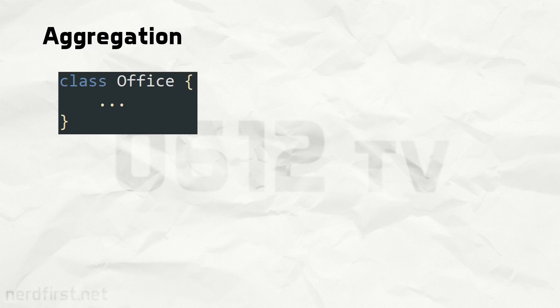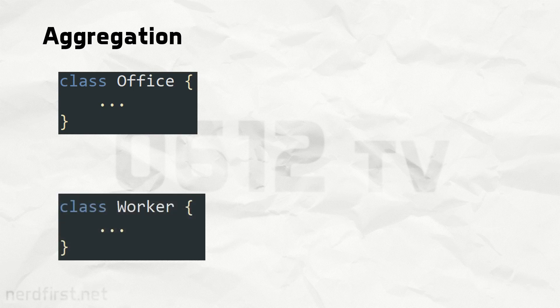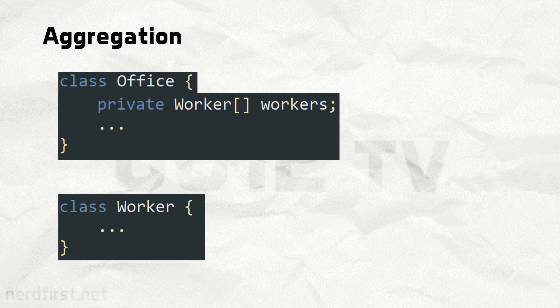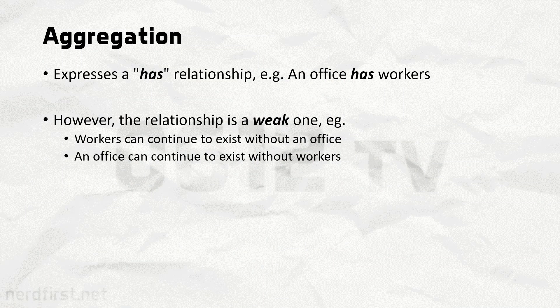Let's take a look at aggregation first. Let's say we have an office — an office has a bunch of workers. We can say that within this office, we have workers contained inside. Here's the critical part: if one of the workers were to leave their job, they would no longer be part of the office, but that doesn't stop them from existing. They still continue to be a worker and can work elsewhere. Essentially, this relationship isn't exclusive. An office can continue to exist without any workers, and the workers can exist without an office. This is what we call aggregation — objects that have meaning and value on their own can be used as part of another object.